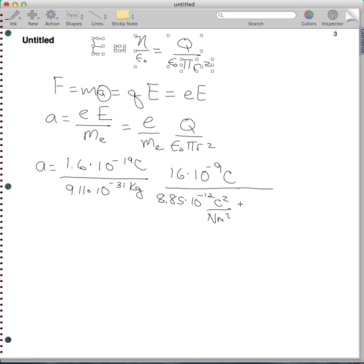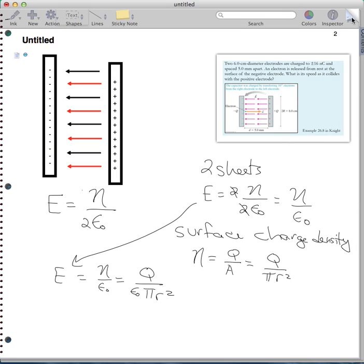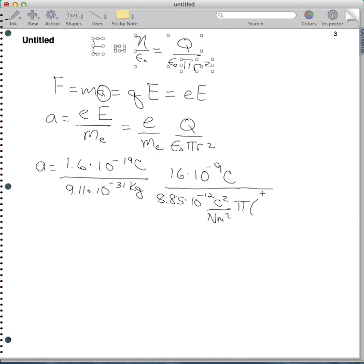And then we have pi, and our radius is half of .06. So here they tell us in the problem that our electrodes are 6 centimeters in diameter. So my radius then is going to be 3 centimeters, or 0.03 meters squared. And when I calculate this out, and I use my calculator, I get that the acceleration is 1.12 times 10 to the 17th meters per second squared.